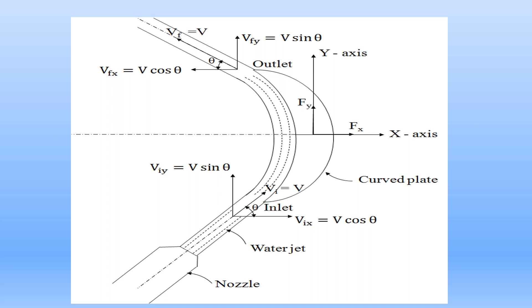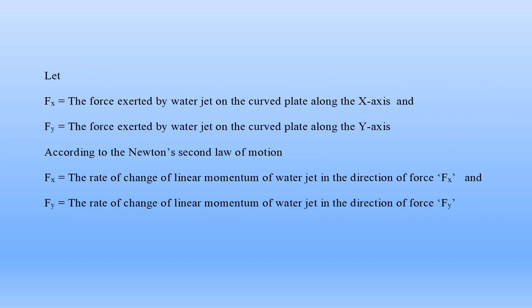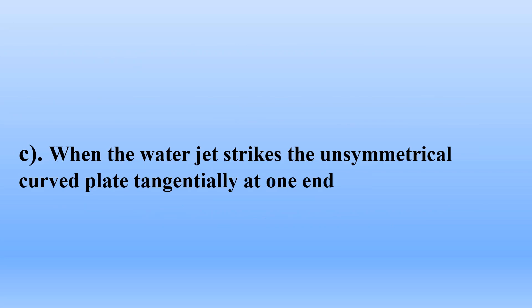At the inlet, the tangent to the curved plate makes angle theta with horizontal. At the outlet, the tangent also makes angle theta with horizontal. Since both tangents make the same angle theta, this is a symmetrical curved plate. We apply Newton's second law in condition 2 and prepare equations for Fx = 2·rho·A·V²·cos theta and Fy = 0 exerted by the water jet on the symmetrical stationary curved plate in the tangential impact.